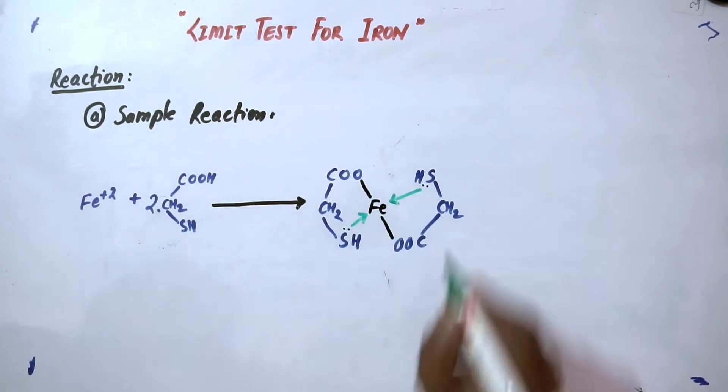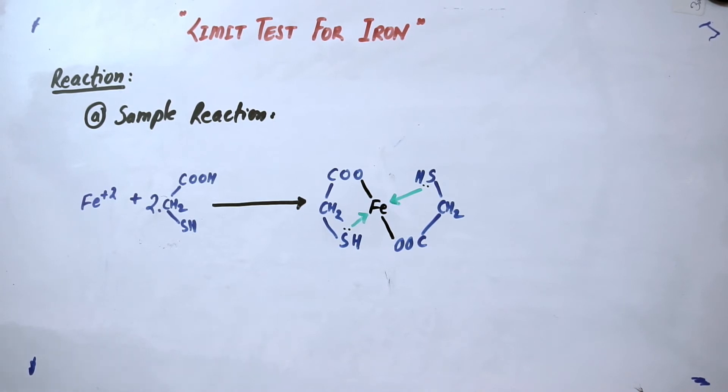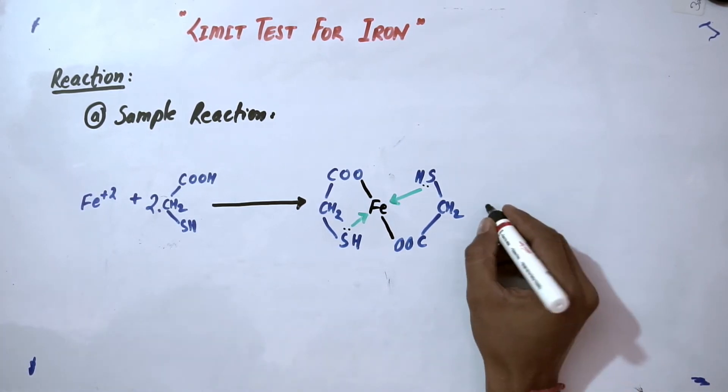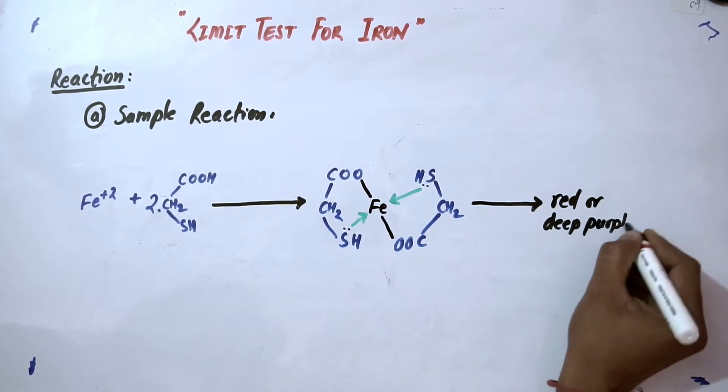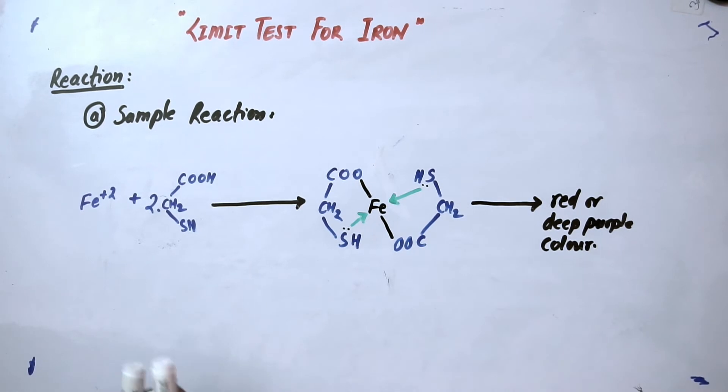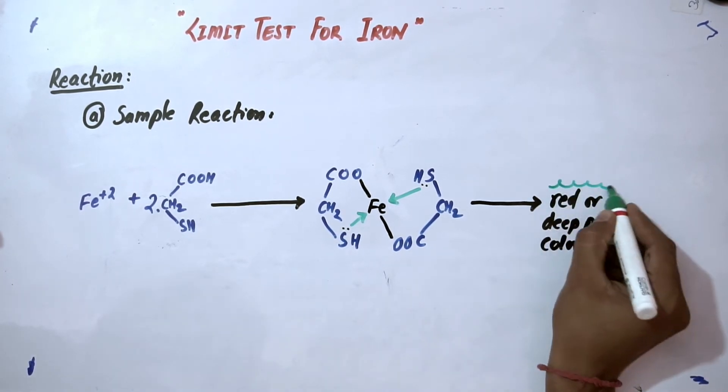You know that sulfur has a lone pair, so those lone pairs will be shared with iron by the sulfur. This is a complex which is called ferrous thioglycolate complex. In presence of ammonia or alkaline media, it will produce red or deep purple color.